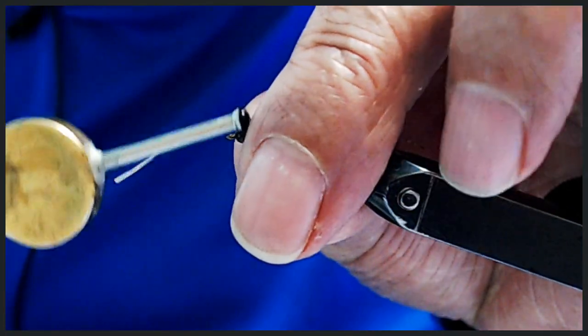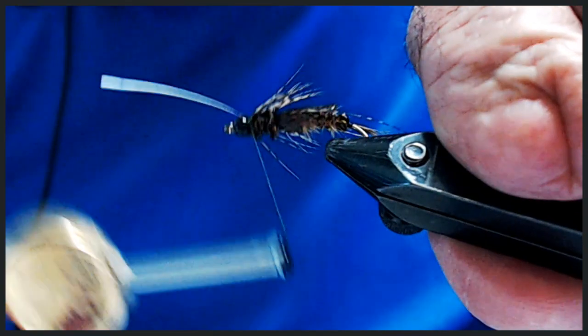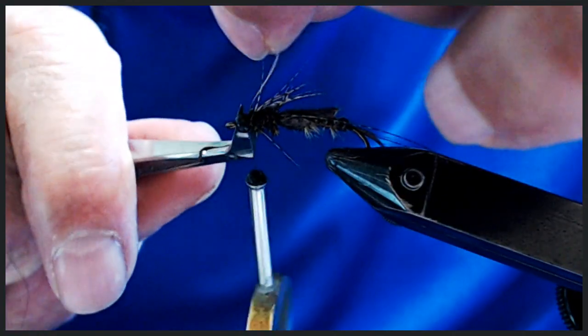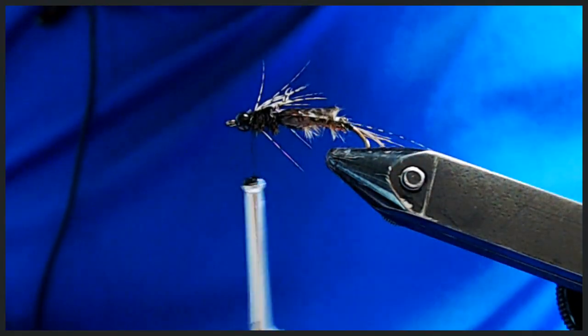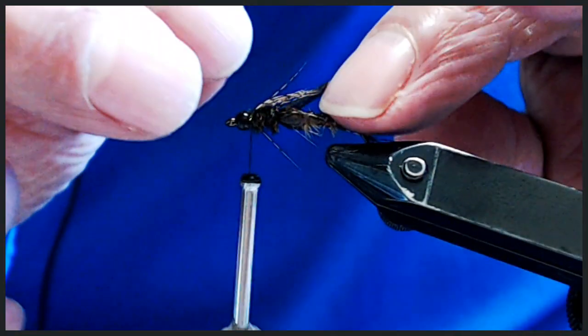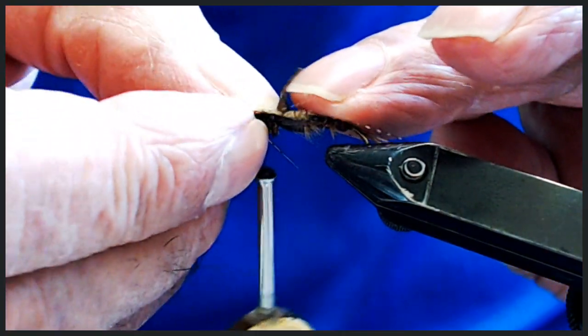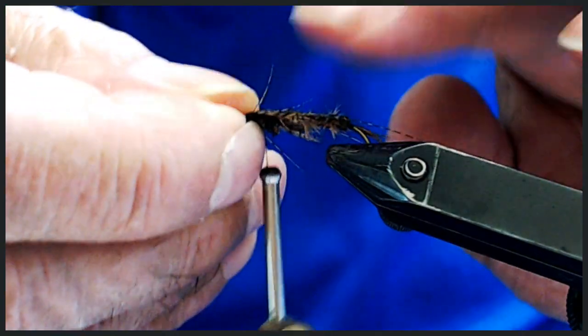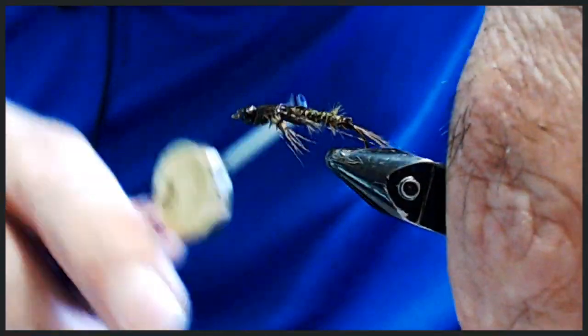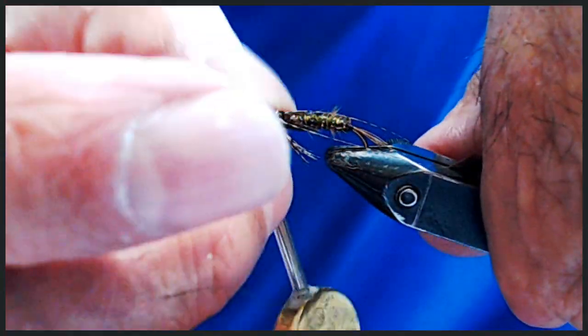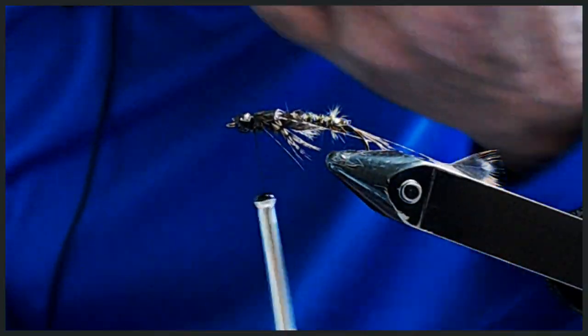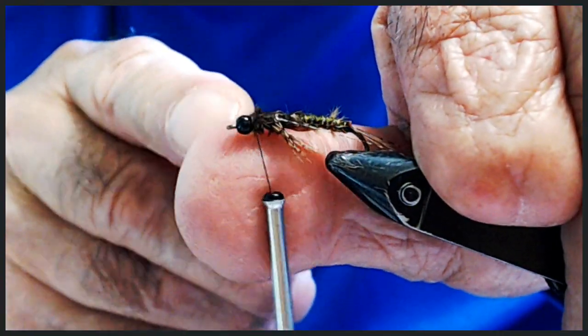Tie in the legs, making sure it's in the center. Like so. Now, take your shell back. And when you tie that down it's going to fold the legs down as you can see. Now I take what's left of the shell back and I fold that back.